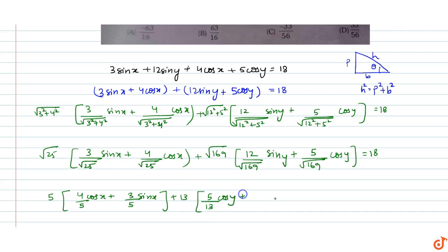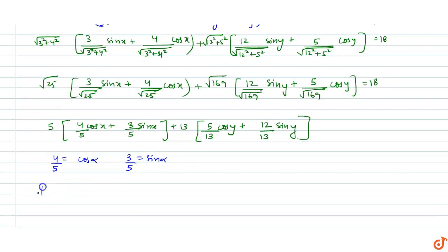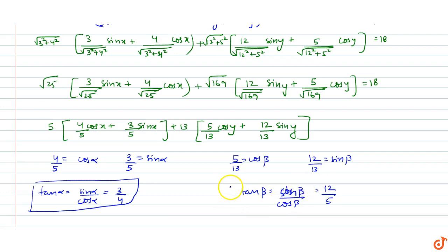अब हम assumption लेते हैं कि 4/5 = cosα और 3/5 = sinα. तो tanα = sinα/cosα = 3/4. यह हो गई tanα की value. यहाँ पर 5/13 = cosβ और 12/13 = sinβ. तो tanβ = sinβ/cosβ = 12/5. यह हो गया tanβ का value.